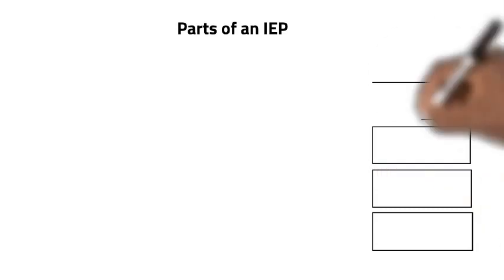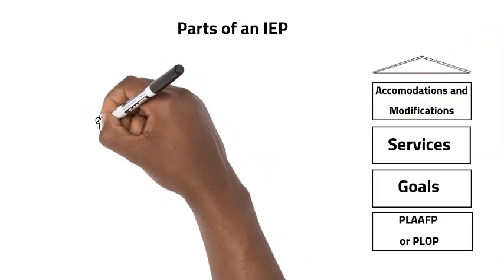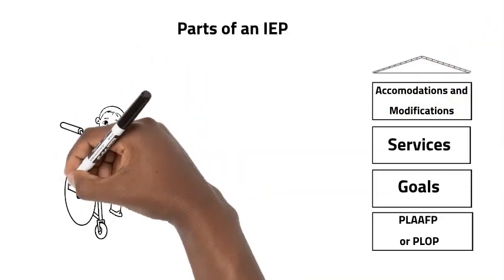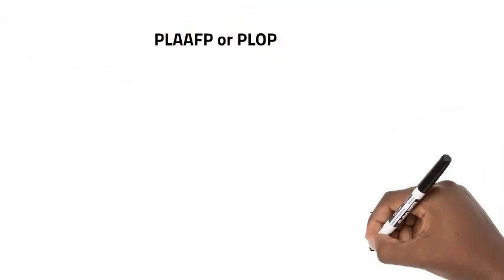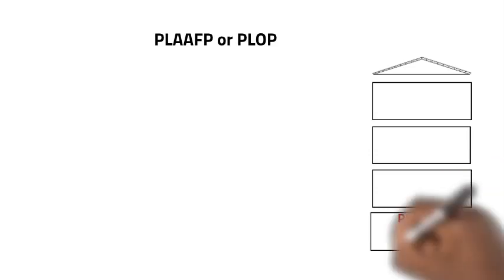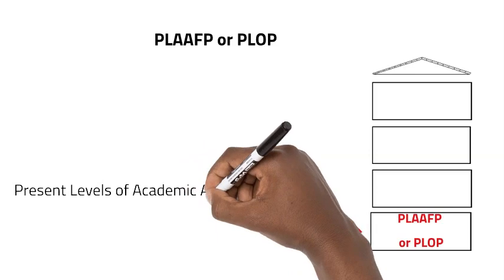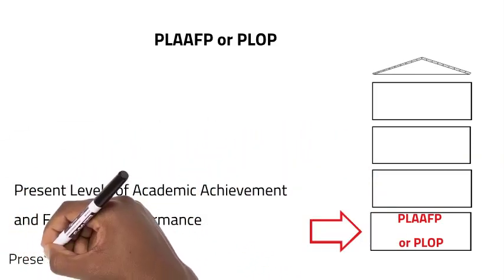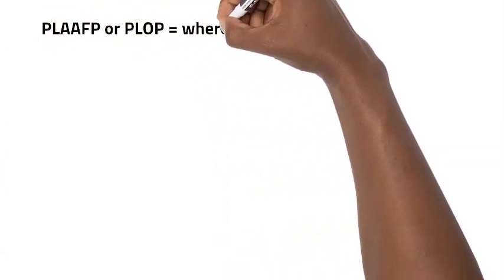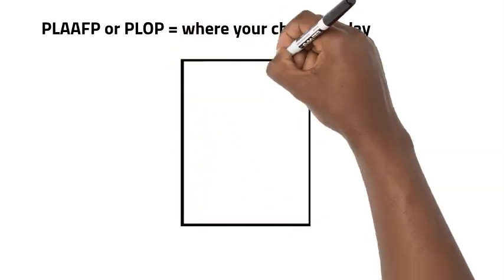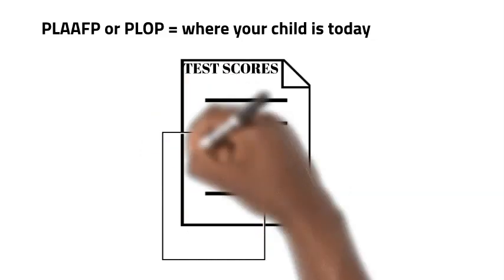An IEP has several key components that are required under that law. They may look a little different from state to state and school district to school district, but at a minimum, an IEP will include PLAFP or PLOP. PLAFP stands for Present Levels of Academic Achievement and Functional Performance, and PLOP stands for Present Levels of Performance. This is what describes your child's present levels, or where their knowledge and skill level is right now. You can think of this as the foundation of the house that we're about to build.